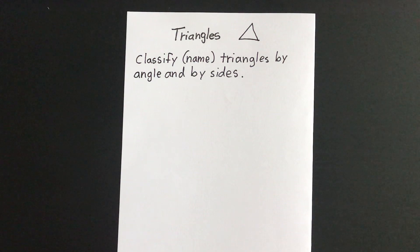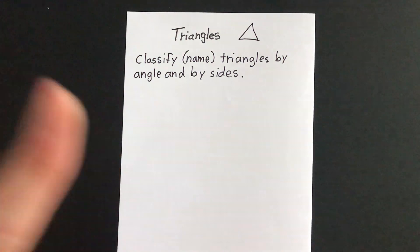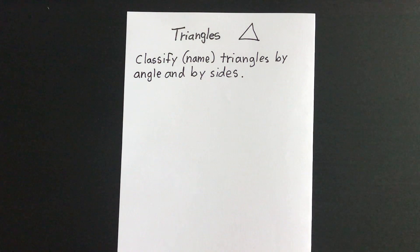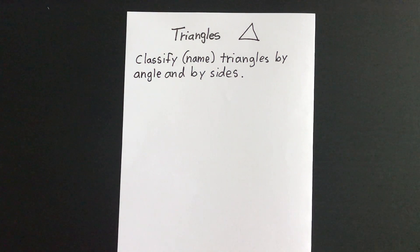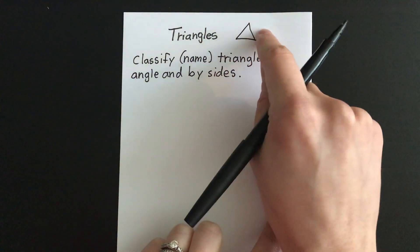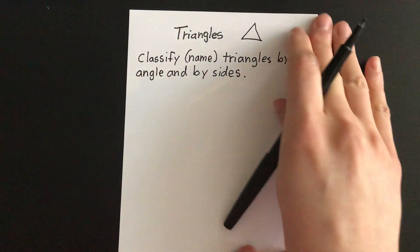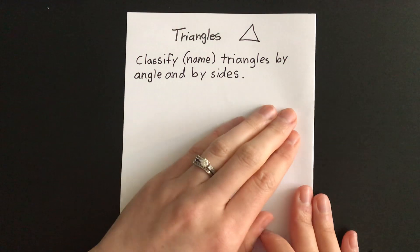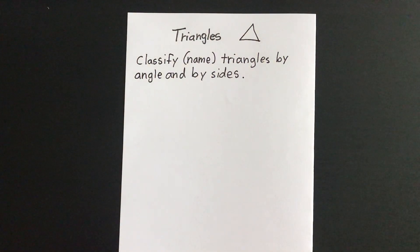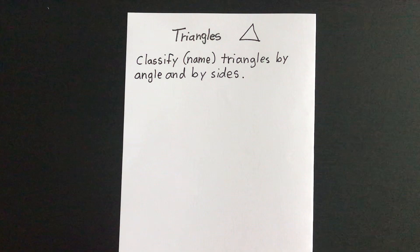So we're actually going to be doing this two ways — kind of like giving the triangles a first name and a last name. One, we're looking at their angles, and then one we're looking at the sides, their little side lines of the triangle. So we're going to start by looking at how we can name different kinds of triangles by looking at their angles. Let's do that one first.